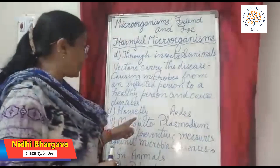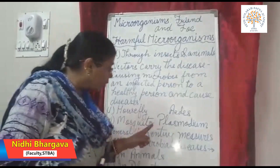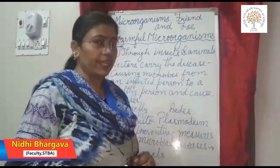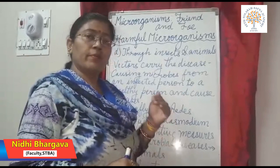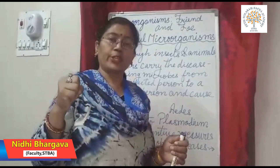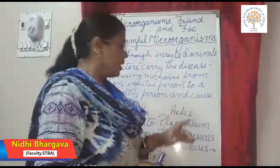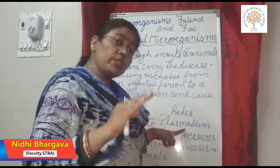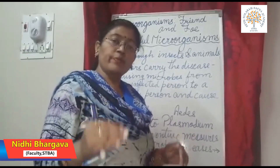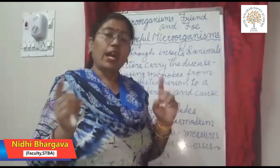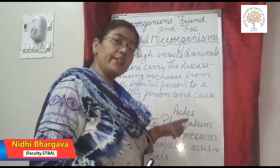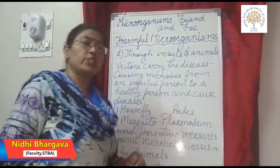Another vector is the mosquito. We are well aware that malaria is caused by a mosquito bite. The female Anopheles mosquito, while sucking blood from a human being, transmits Plasmodium — a protozoan — to a healthy human being, causing malaria, which is a fatal disease. Another mosquito is the Aedes mosquito, which carries the dengue virus; its bite causes dengue fever.